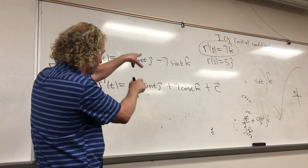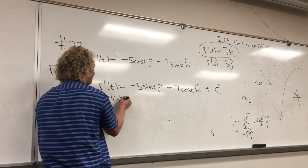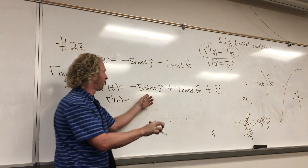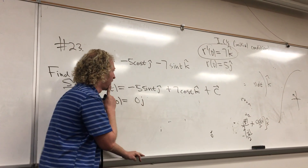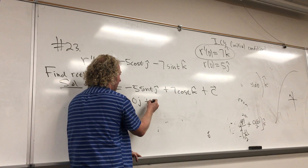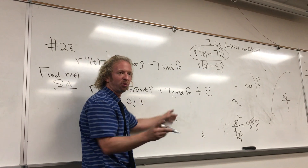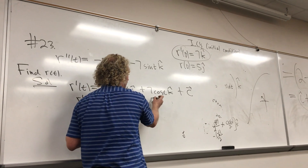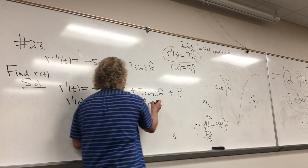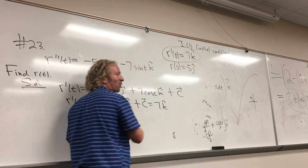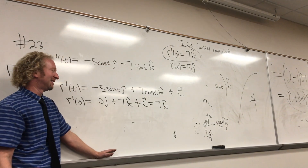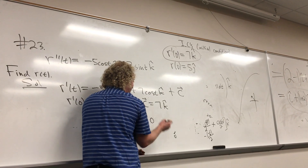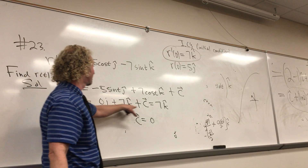So now we're going to impose the first initial condition: r prime of zero. Sine of zero is zero, so we get zero j hat. Cosine of zero is one, so seven k hat. And that's plus C, equal to seven k hat. C is going to be zero — the zero vector. You subtract the seven k's and you get zero.